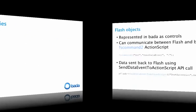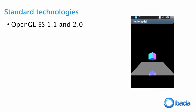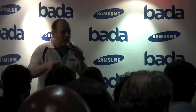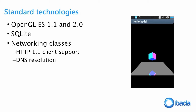We have a bunch of standard technologies. OpenGL ES 1.1 and 2.0, which is very useful for game development. SQLite — just about every other mobile platform uses SQLite for on-device databases, and Bada implements that. It's very similar to the Symbian classes, iOS, and some Android classes, so it's easy to move database code across to Bada. We also have networking classes covering HTTP client support, DNS resolution, Bluetooth, and Wi-Fi — all in the net namespace.